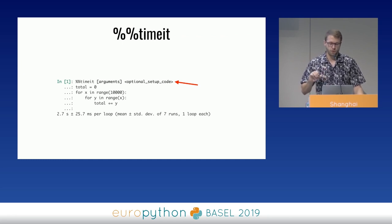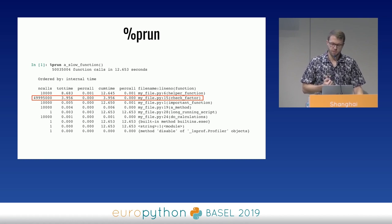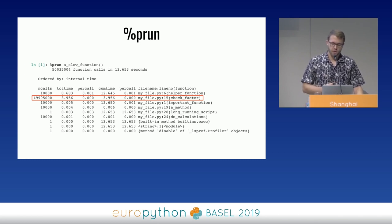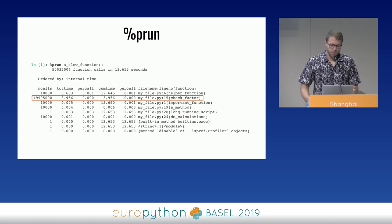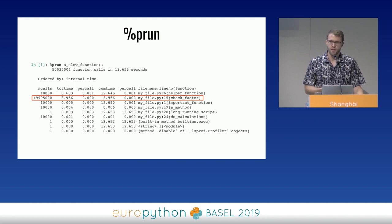Once we know code is slow, we want to know why. We can run the `%prun` magic function, which shows a nice overview of how many times a given function was called, the total time spent, where the function is located, and more. For example, we can see our slow function running for 12 seconds performing 50 million function calls, with most time spent in a function called `check_factor` in `my_file.py` — so now we know where to look.